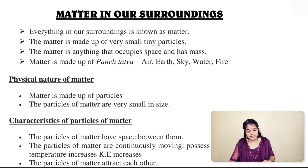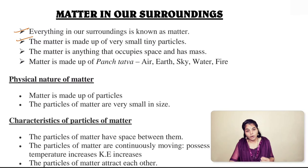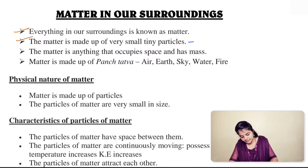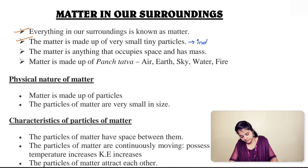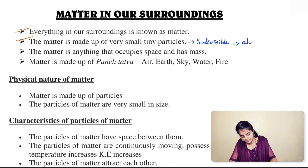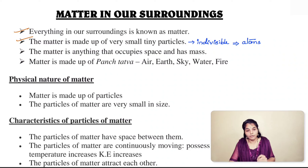Everything that's present around us in our surroundings is known as matter. This matter is made up of very small tiny particles, and these tiny particles from which matter is made of are indivisible. These indivisible tiny particles are known as atoms. So, matter is made up of atoms which are indivisible in nature.